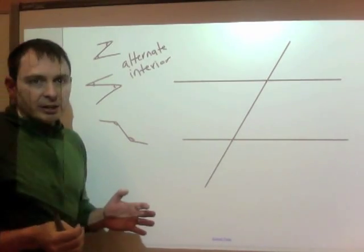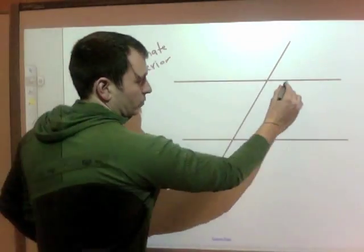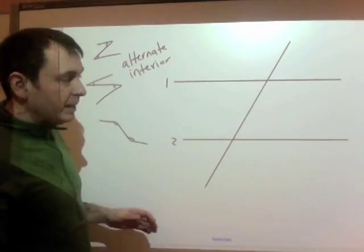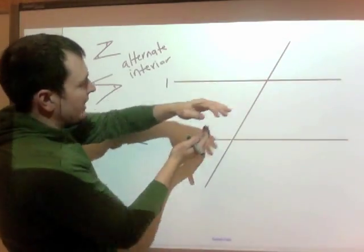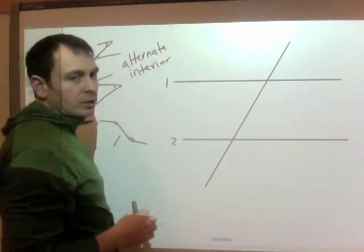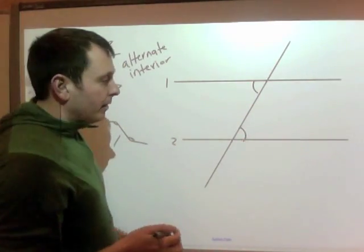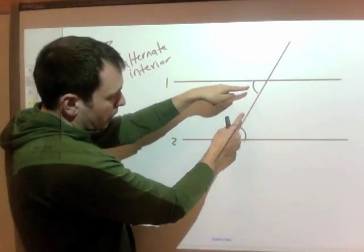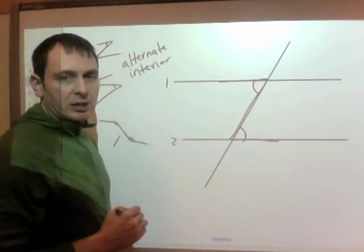They're interior because they're inside of the two lines. If this is one main line and this is our other main line, and the transversal cuts through them, interior means it's on the inside of those lines — not out here or out here. They're also alternate, meaning they're on alternate or opposite sides of the transversal. So these two make a Z because they're interior — inside the lines — and alternate, on opposite sides of the transversal. There is our letter Z.